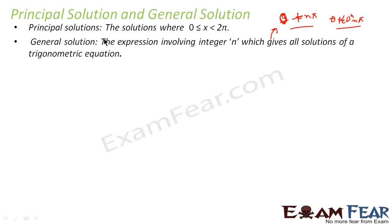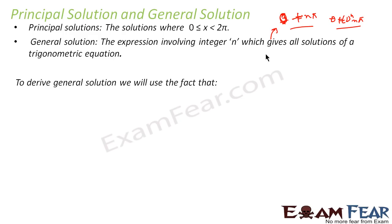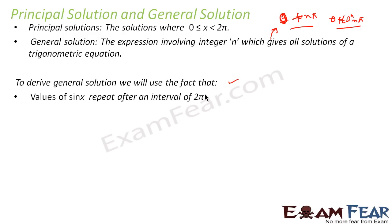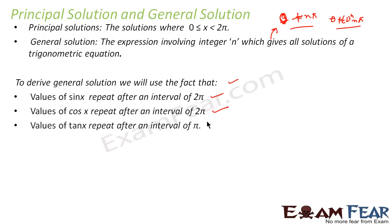In the case of principal solution, we have only those solutions which are between 0 and 2π. To derive the general solution, we use the fact that the value of sin x repeats after 2π, the value of cos x repeats after 2π, and the value of tan x repeats after 2π. We have shown this using graphs in our earlier videos, so please watch that if you have not watched.